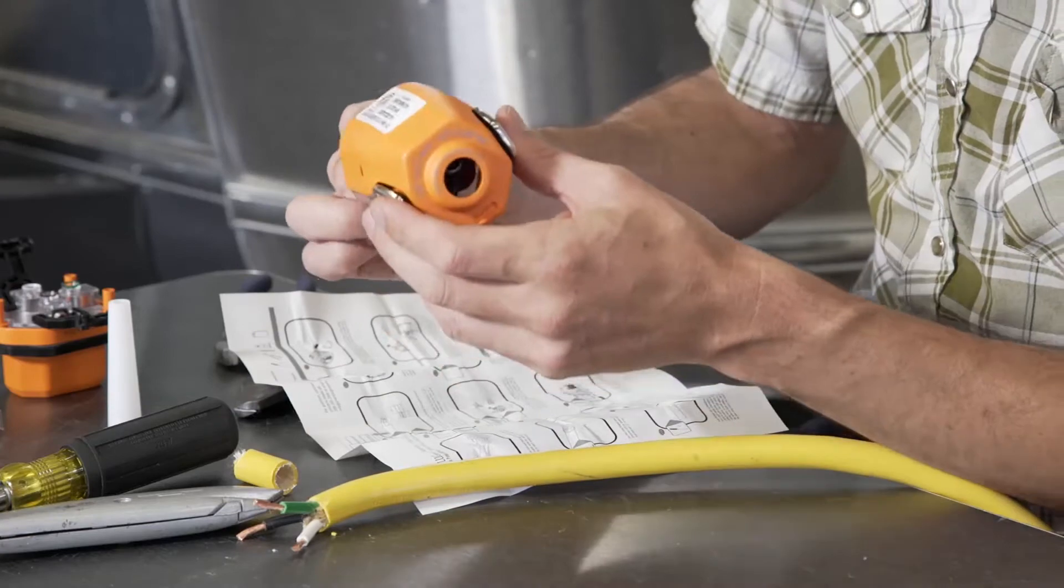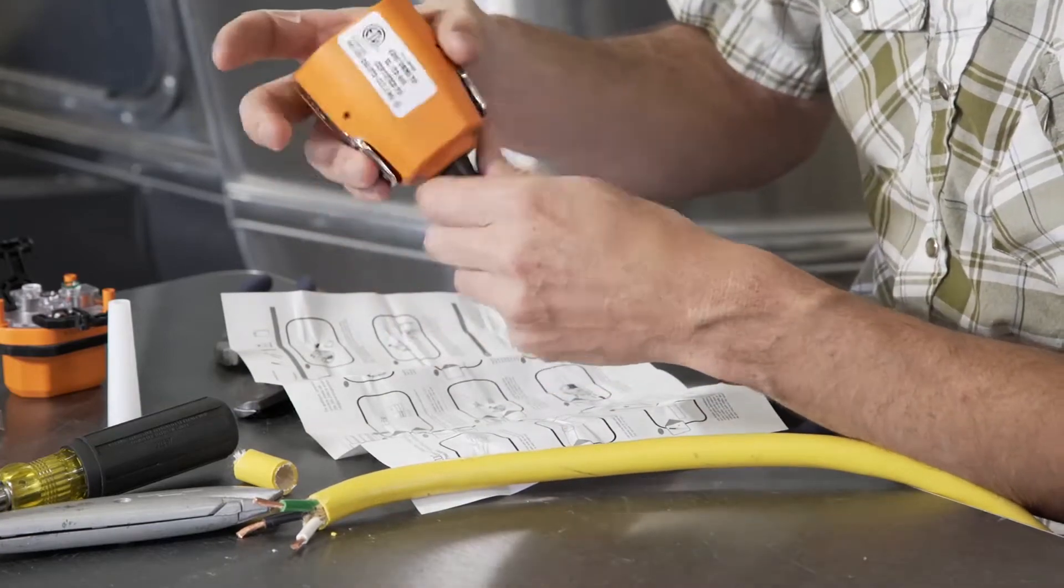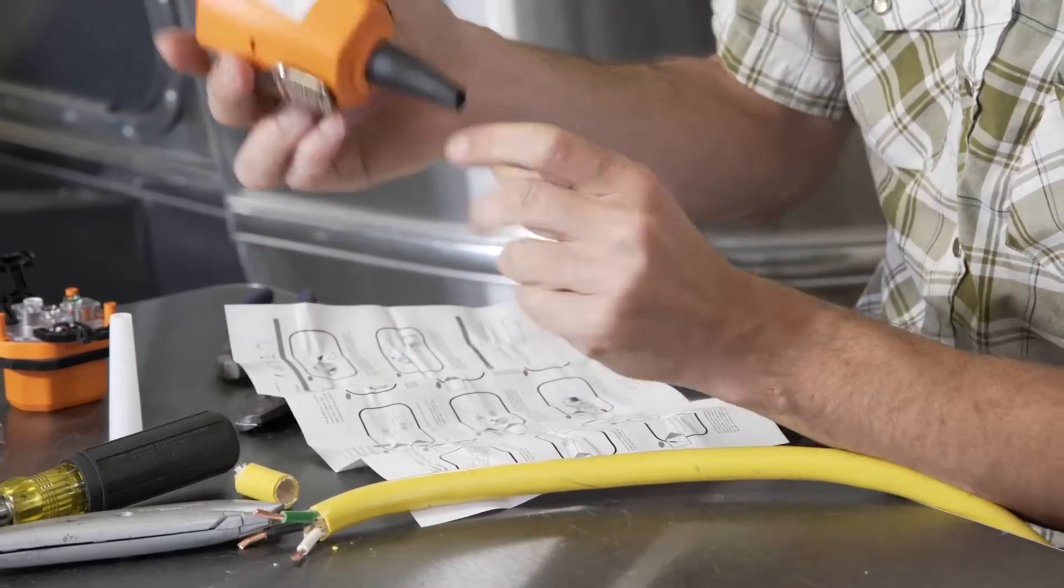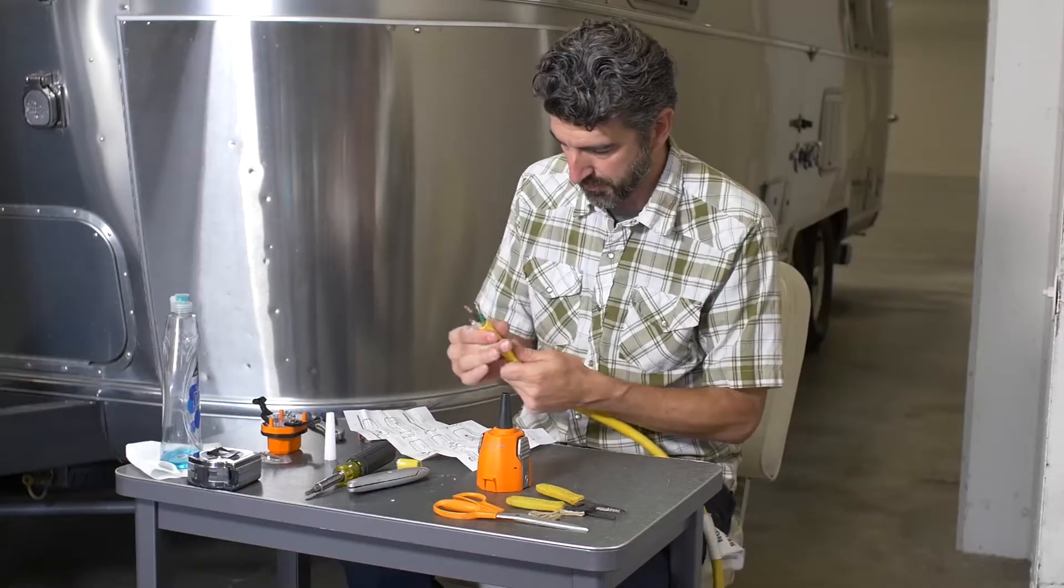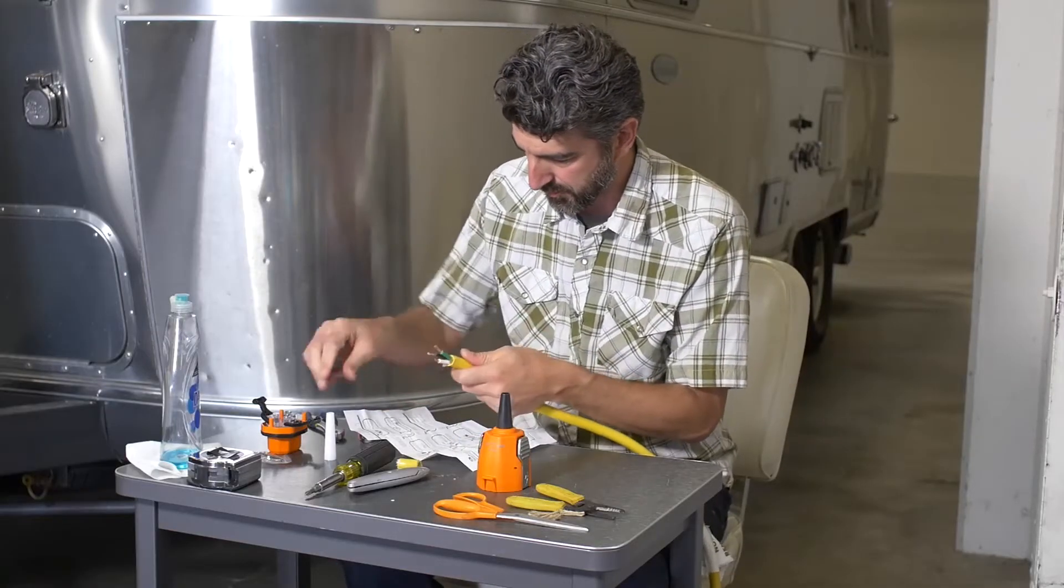Compress the flexible cord seal and force it into the rear of the plug body as shown. Look inside the plug body and inspect for proper cord seal fit. The seal should be fully expanded and free from folds or kinks.